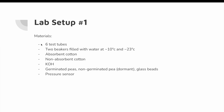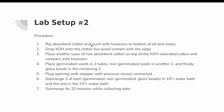Our lab setup: the materials needed are six test tubes, two beakers filled with water at 10°C and 23°C, absorbent and non-absorbent cotton, KOH, germinated and non-germinated seeds, glass beads, and a pressure sensor. For the procedure: we pushed absorbent cotton to the bottom of all test tubes, dropped KOH onto the cotton avoiding the edges, placed non-absorbent cotton on top to prevent KOH contamination, then added the measured germinated seeds, non-germinated seeds, and glass beads — two test tubes each, six total. We plugged in the stopper with the pressure sensor connected, submerged three of each into the 10°C and 23°C water baths, and collected data for 20 minutes.